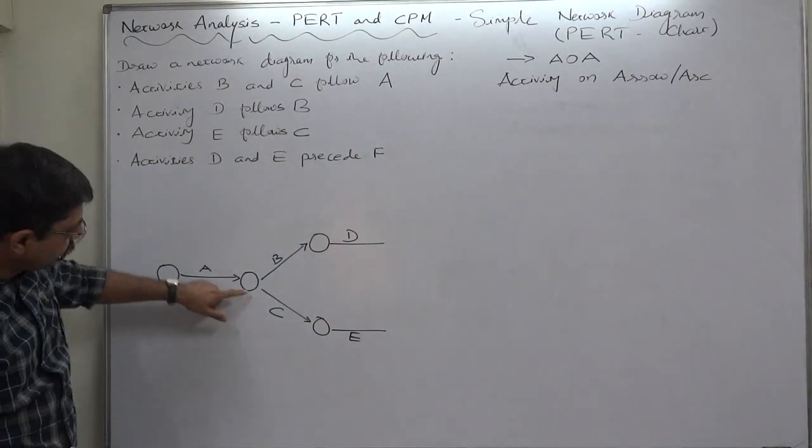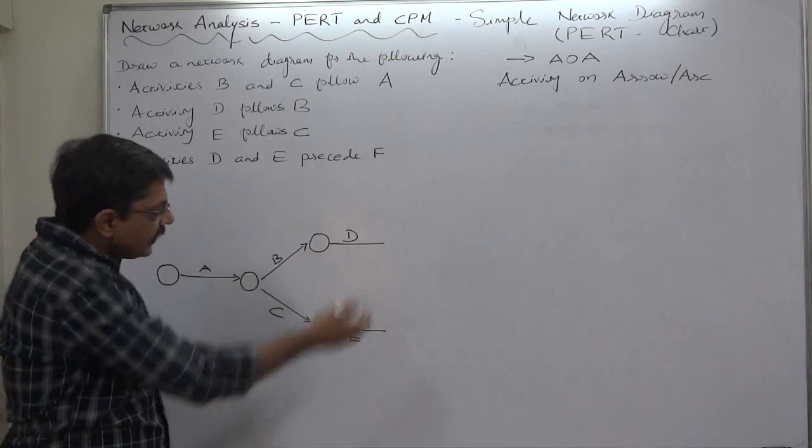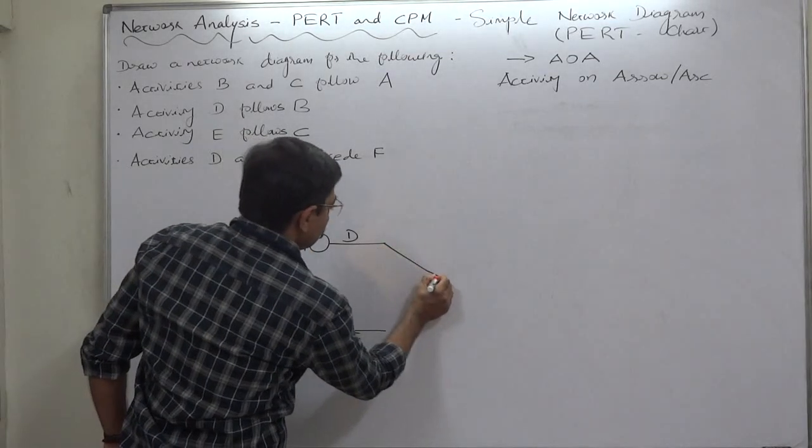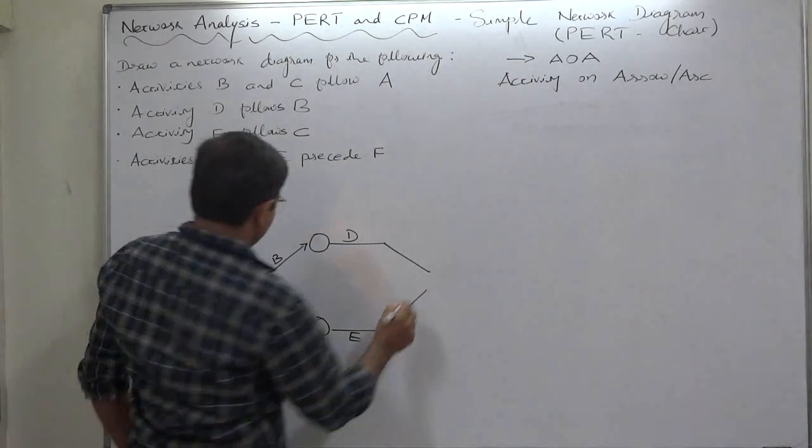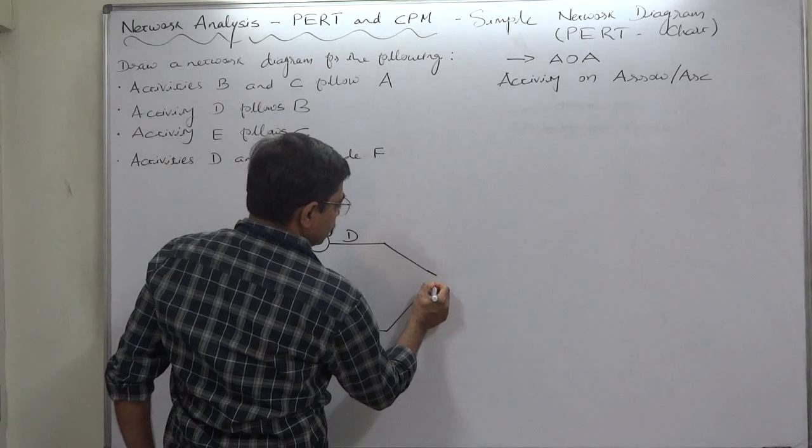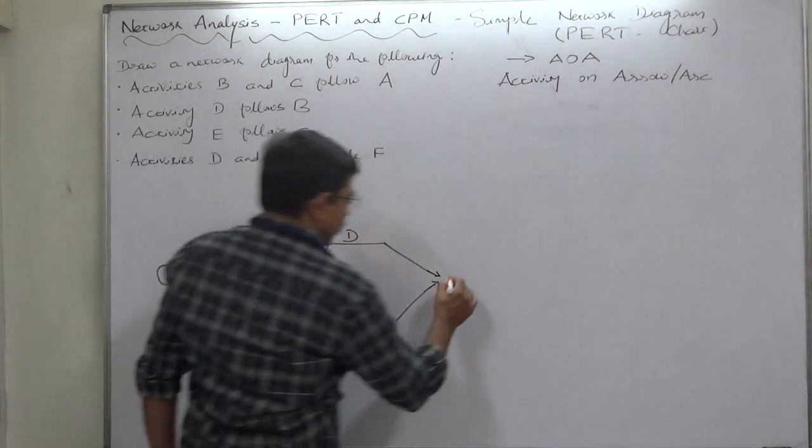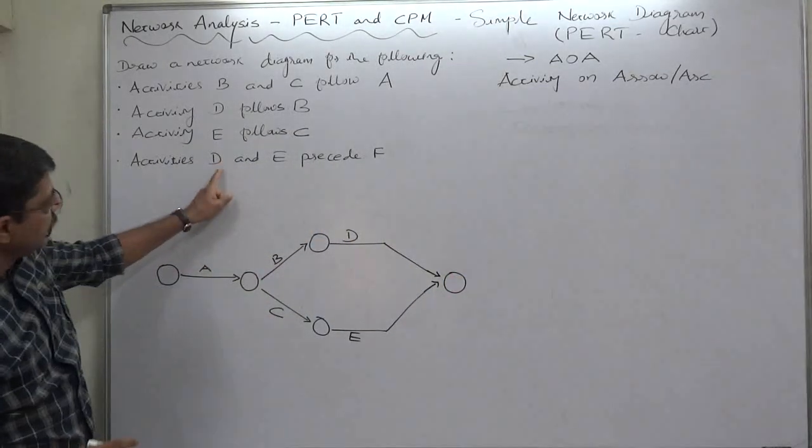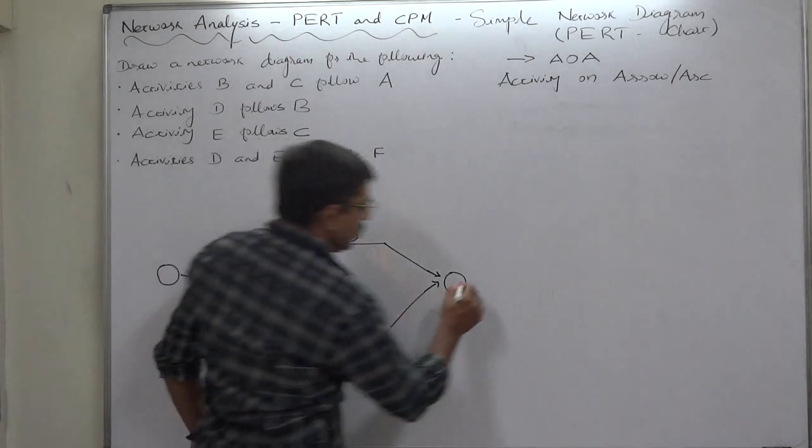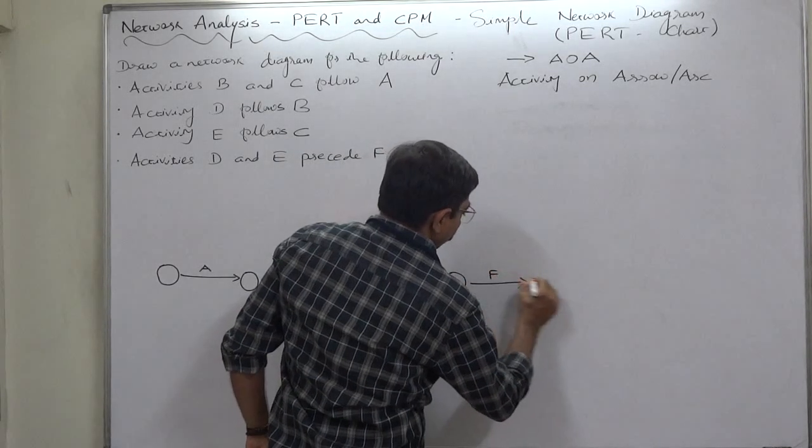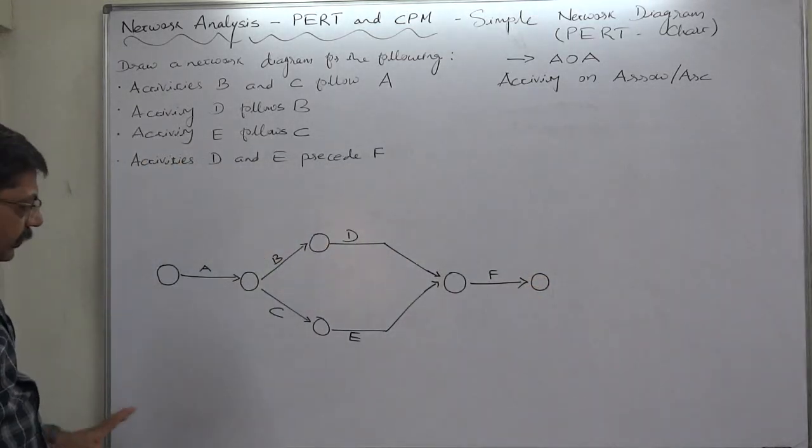D and E precede F. Yes, D and E both commonly precede F. That means F is the common successor of D and E. That means the event where F starts will be the merge event. Yes, this is the example of burst event. From this event two different activities start, now exactly the reverse case. It is not at all necessary to draw the final draft in the first trial itself, but this is a very simple.